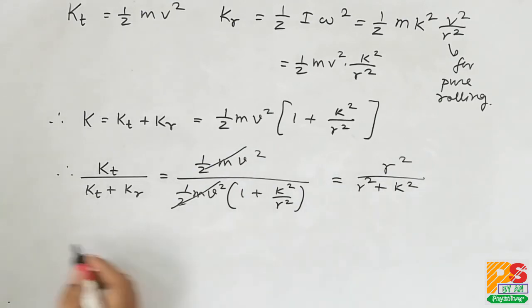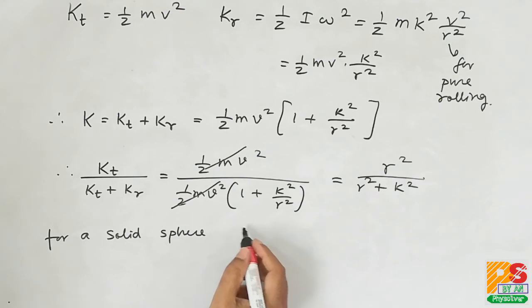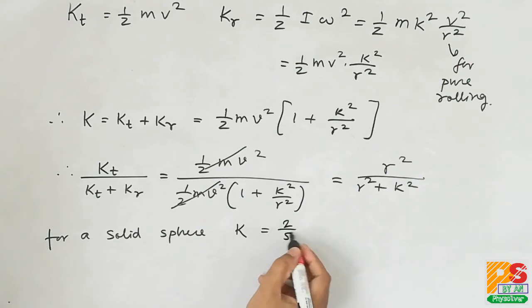I again mention k is the radius of gyration. Therefore, for a solid sphere, we know moment of inertia about the diametrical axis is 2 by 5 m r square. So I can write k square as 2 by 5 r square. Now putting this value...